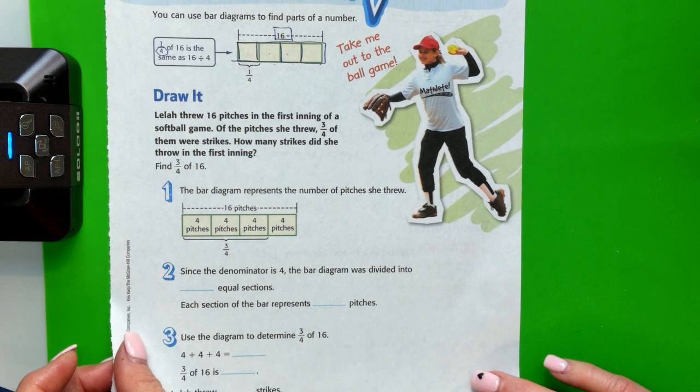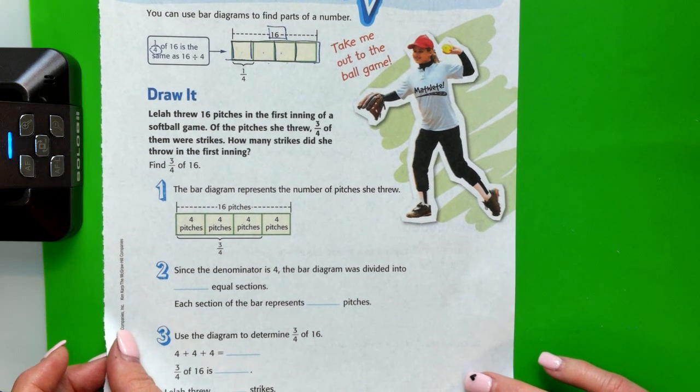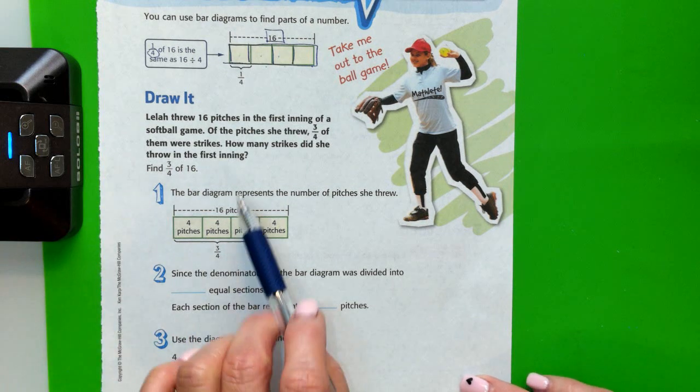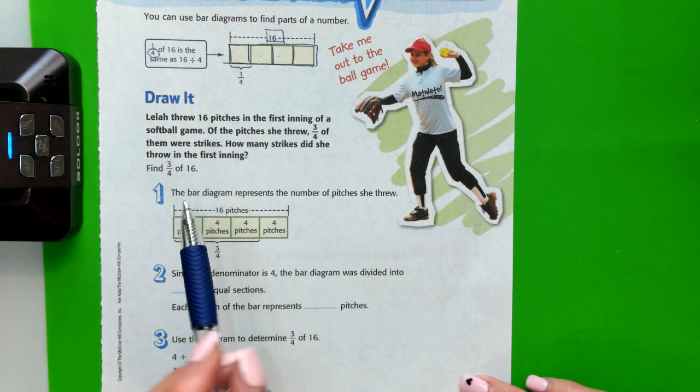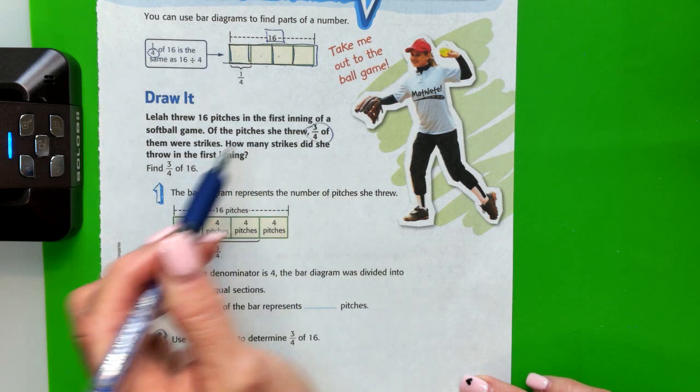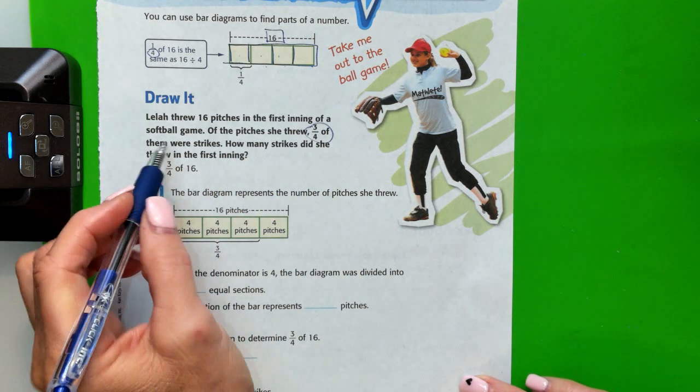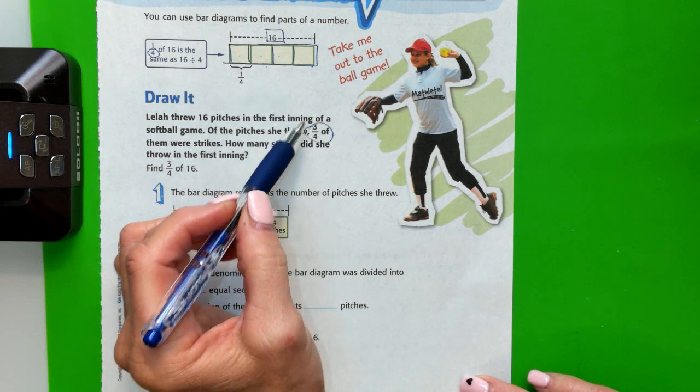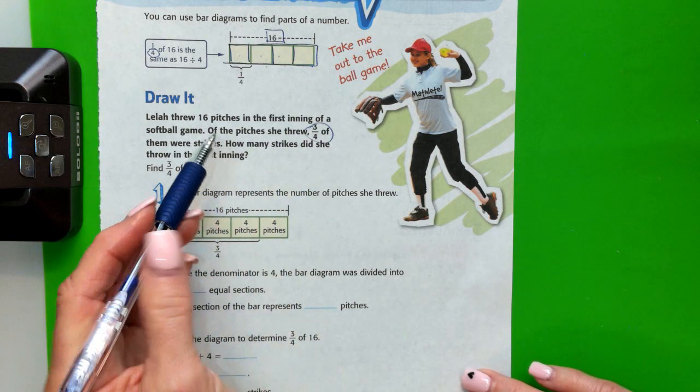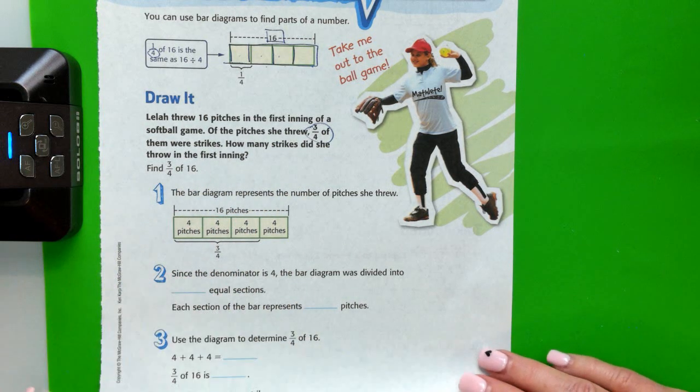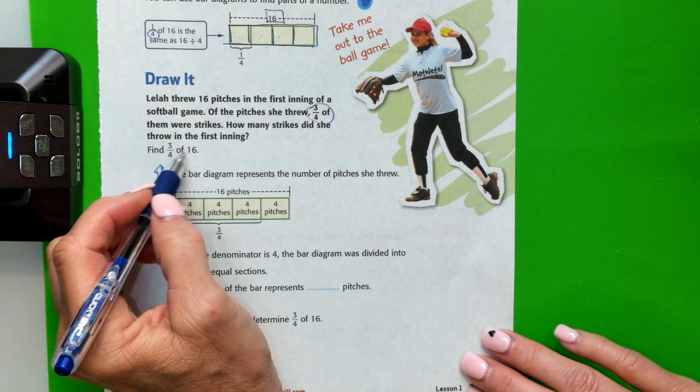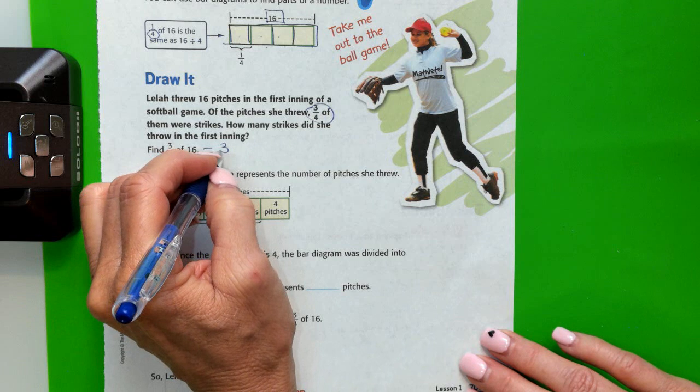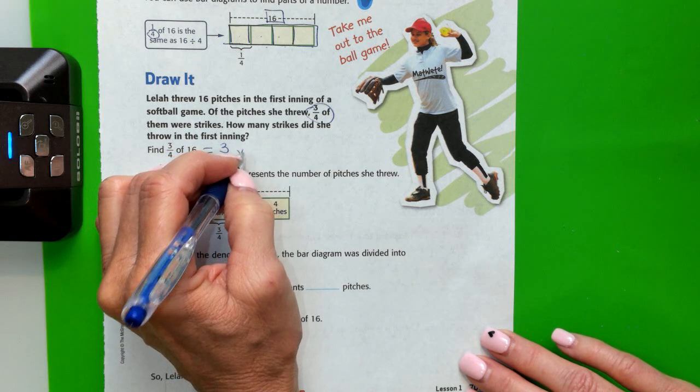It says, Layla threw 16 pitches in the first inning of a softball game. Of the pitches she threw, three quarters of them were strikes. How many strikes did she throw in the first inning? So we're going to convert three quarters into the actual number of strikes that she threw. We're going to find 3 fourths of 16, which is the same as saying 3 fourths times 16.